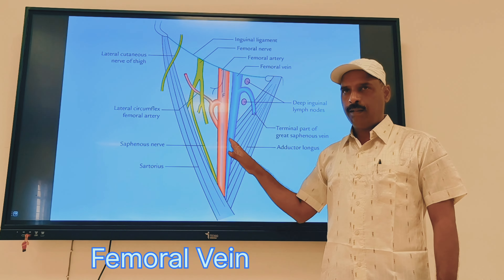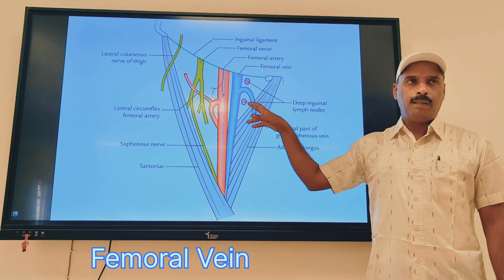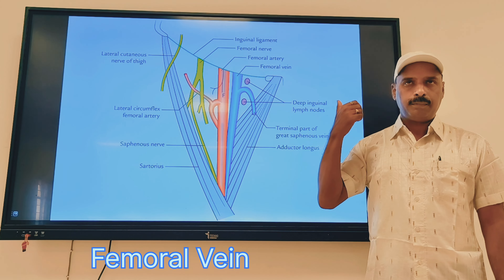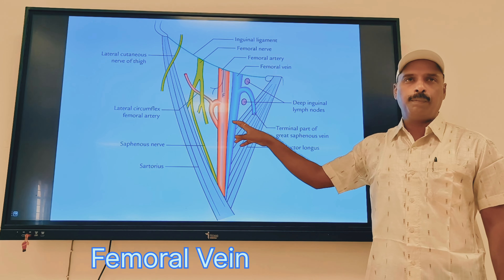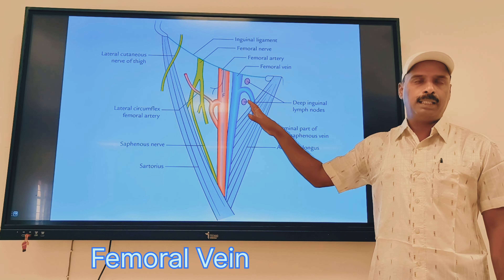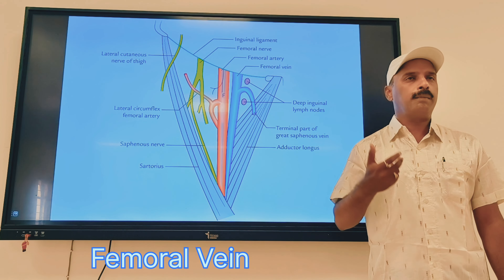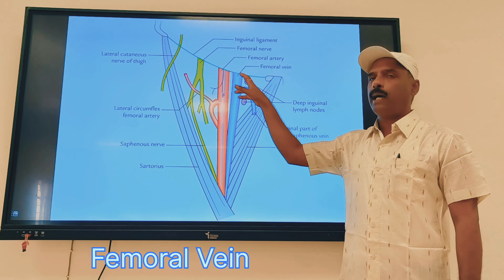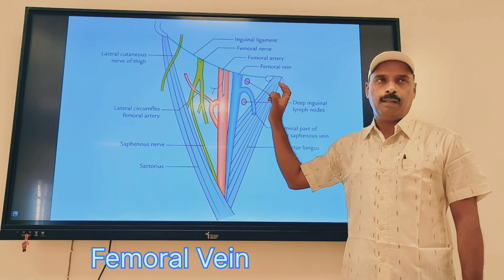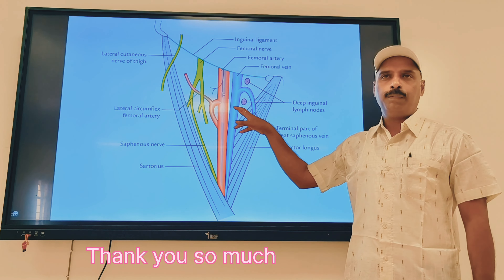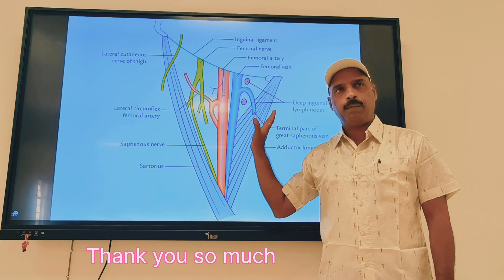What is the clinical anatomy? In children, we preferentially choose the femoral vein for intravenous injection and IV fluids. Even in shock conditions or burn conditions, we may choose to give IV fluids through the femoral vein. This is all about the applied anatomy of the femoral vein.